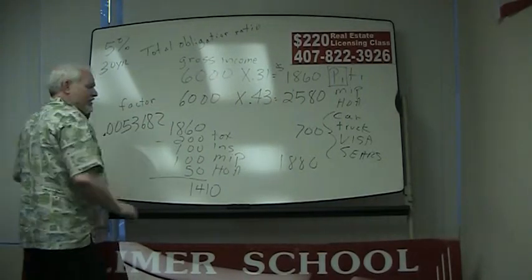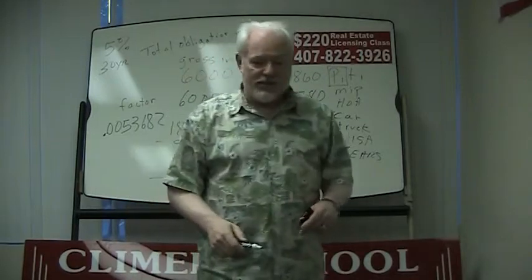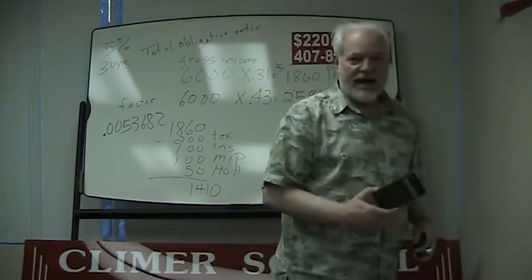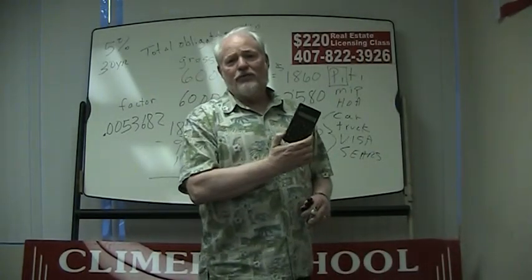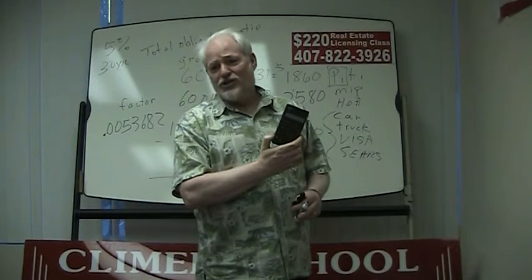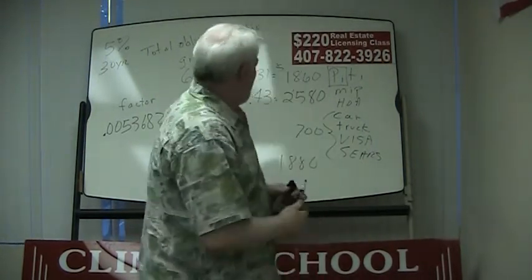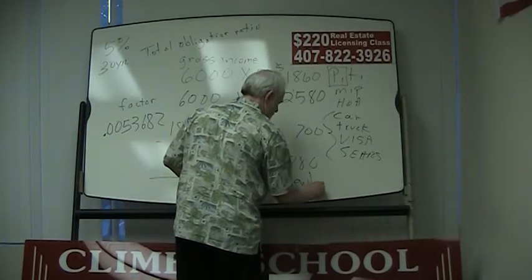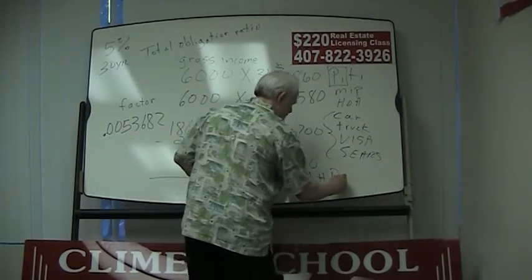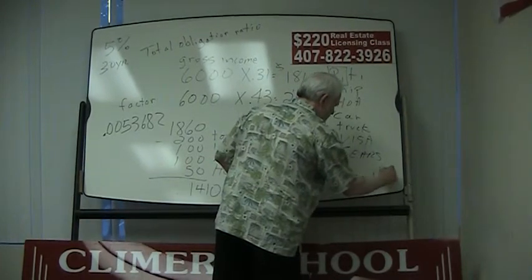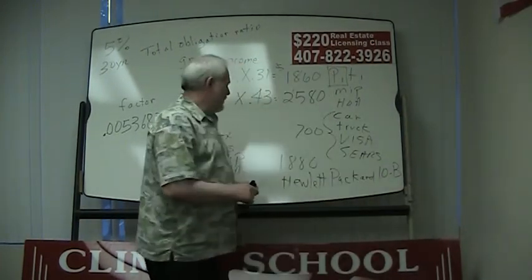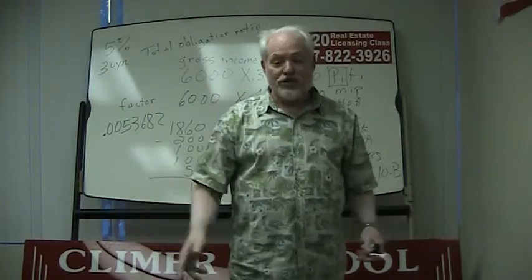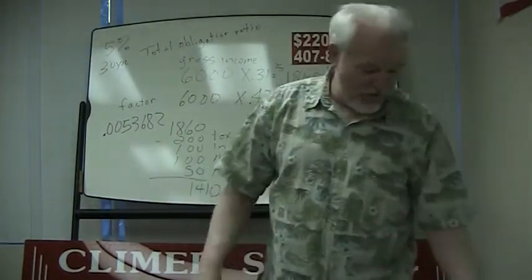By the way, this is the second easiest way to compute the payments. The first easiest way is to buy yourself a Hewlett Packard 10b calculator. You see the one I'm holding up here? This is an antique, about 15 years old. Get yourself a Hewlett Packard 10b, that'll run you about $30 at the store. I'm sure there's an app you can get for your phone.